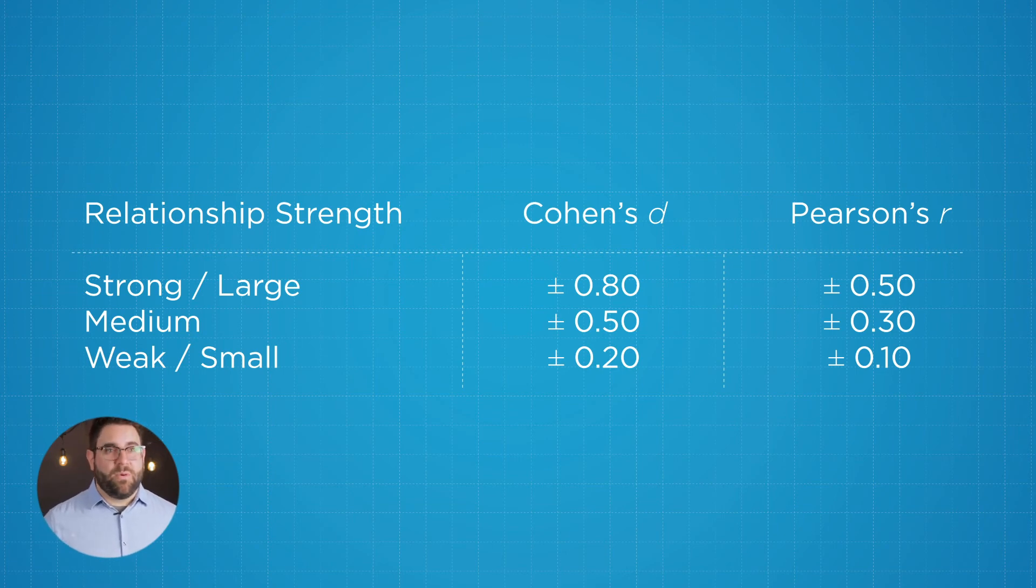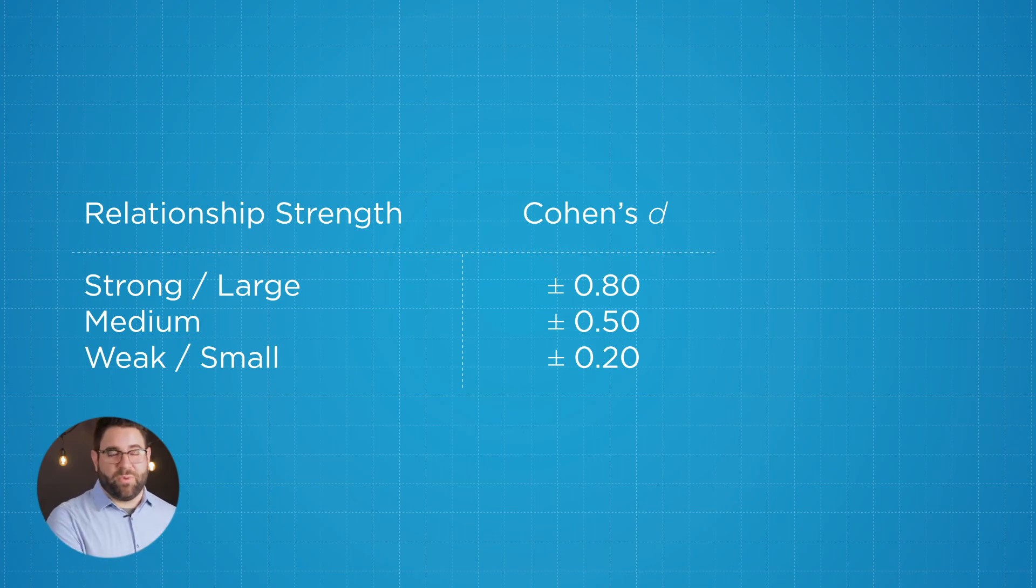So when you're thinking of Cohen's D, remember we have two groups, and we have one continuous variable. We're going to have three different categories. The first of which is a weak or small correlation, and that is at 0.2. We then have a medium correlation at 0.5, and a strong or large correlation at 0.8.